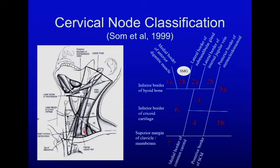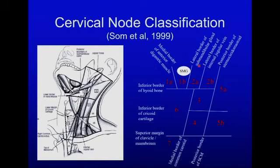Those are the four major anatomic landmarks: the posterior border of the sternocleidomastoid, the hyoid bone, the lateral border of the submandibular gland above the hyoid, and the medial border of the common carotid artery below the hyoid. To subdivide level one into 1A and 1B, use the medial border of the anterior belly of the digastric muscle. To divide level two into 2A and 2B, nodes well lateral to the internal jugular vein with a clear fat plane are 2B; otherwise 2A.